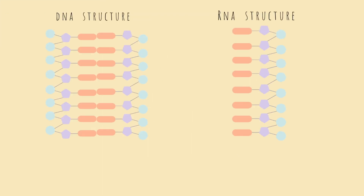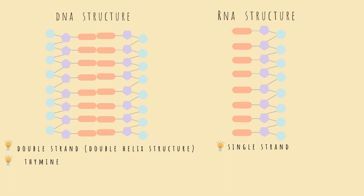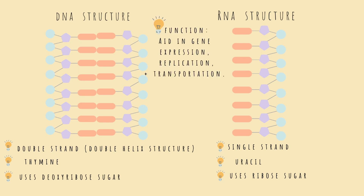Let's compare the DNA structure to the RNA structure. The DNA structure is made of a double strand we refer to as a double helix, while RNA is made of a single strand. DNA has the nucleotide thymine, while RNA has uracil. DNA uses the sugar deoxyribose — hence the name deoxyribonucleic acid — and RNA uses ribose, which is why RNA stands for ribonucleic acid. The function of DNA is to aid in gene expression, replication, and transportation. RNA has many functions, but to basically sum them all up, RNA assists DNA.